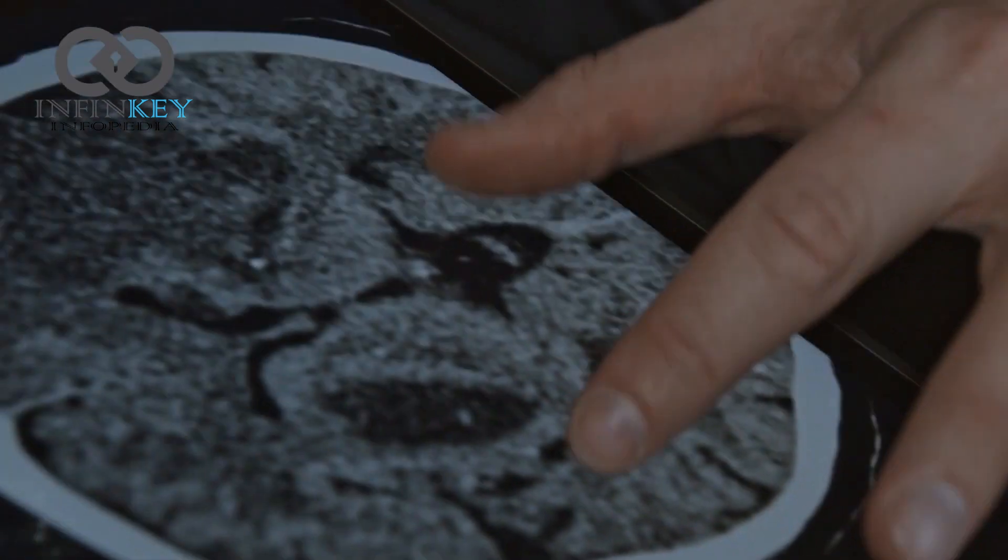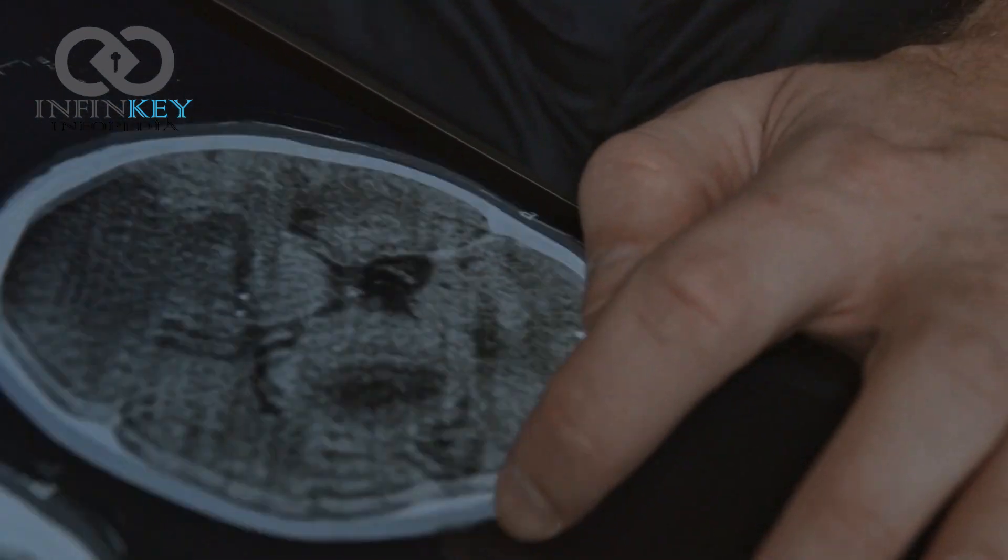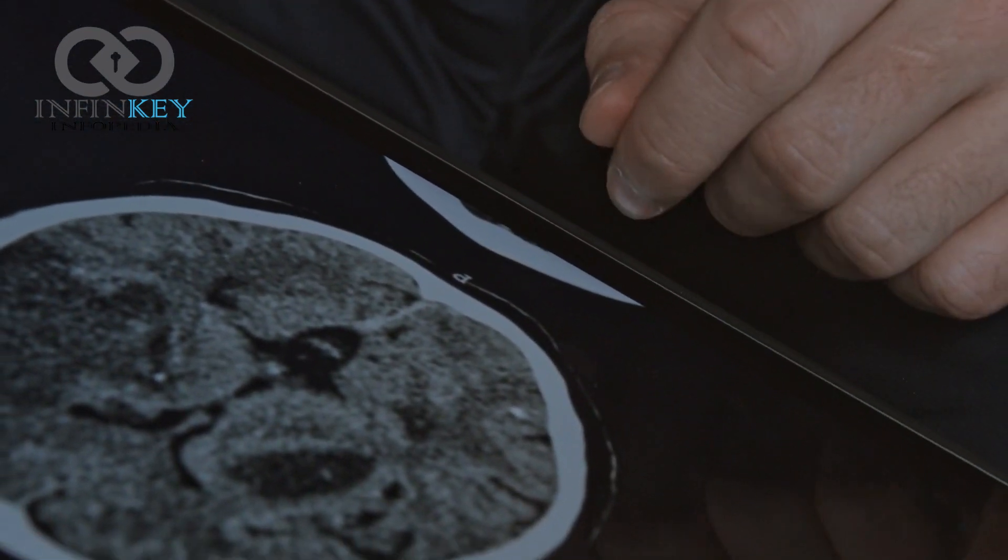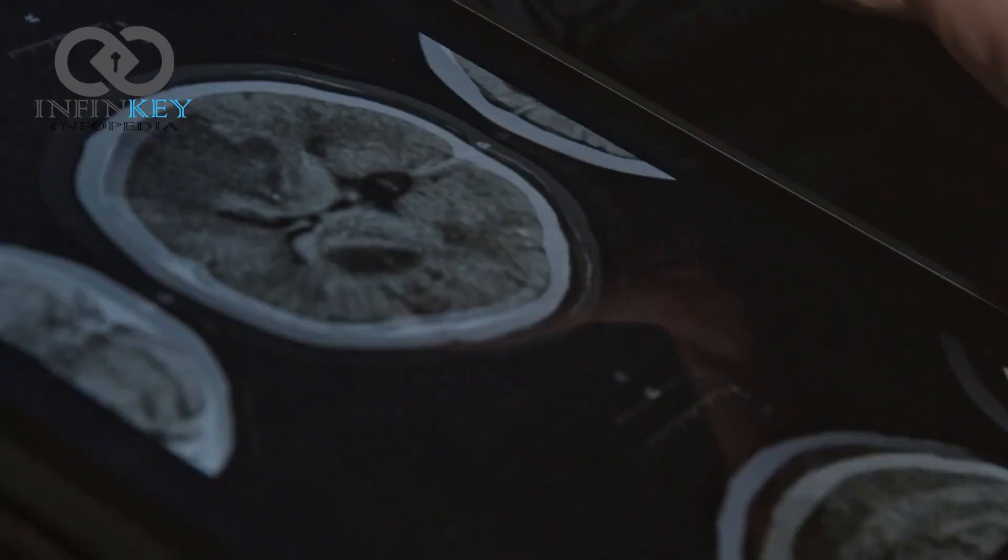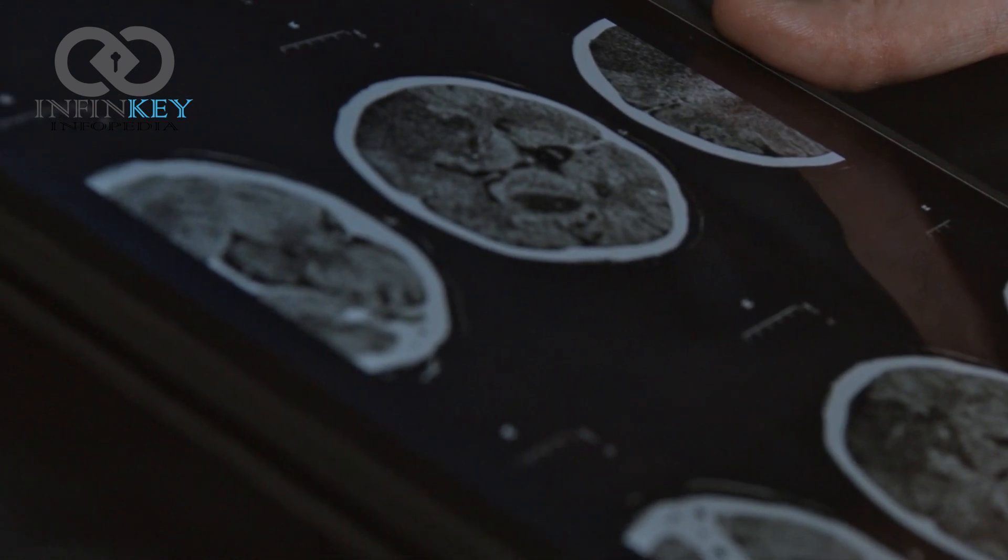Neuralink is Musk's neural interface technology company. It's developing a device that would be embedded in a person's brain, where it would record brain activity and potentially stimulate it.